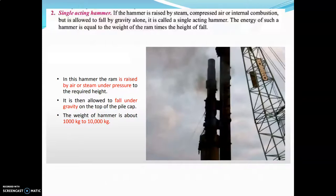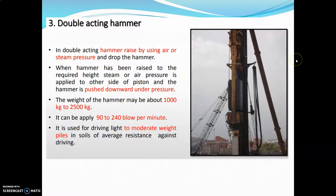Next one is double acting hammer. In a double acting hammer, the ram rises using air or steam pressure. When the hammer has been raised to the required height, steam or air pressure is applied to the other side of the piston and the hammer is pushed downward under pressure. The weight of the hammer may be about 1000 to 2500 kg. It can apply 90 to 240 blows per minute and is used for driving light to moderate weight piles in soils of average resistance against driving.